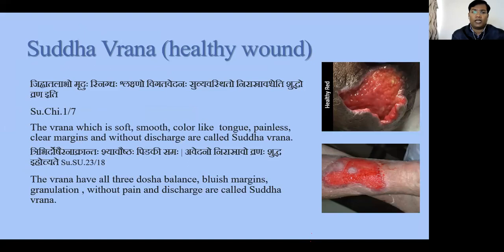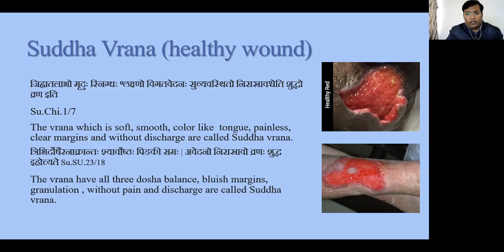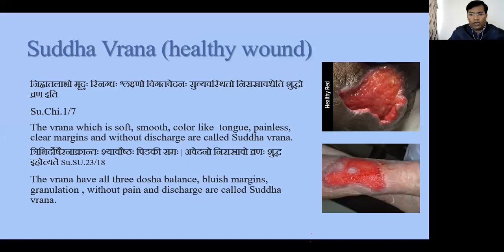The color of the wound is just like Jeeva Talabho — that wound looks like the tongue. The color of the tongue is similar to a healthy color. Sushruta mentioned: Jeeva Talabho, Mrdu Ishnikdho, Slakshna, Vigat-Vednaha, Subhavastito, Nira-Saravas-Chait Suddho, Suddho Vrana Iti. The Vrana which has texture just like the tongue, is soft, smooth, having no pain, margins are equal and clean, and there is no discharge — if any wound possesses these features, that wound is a completely healthy wound.